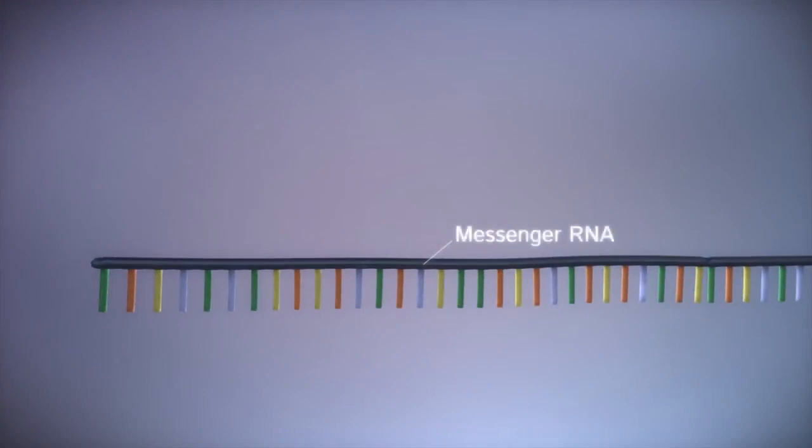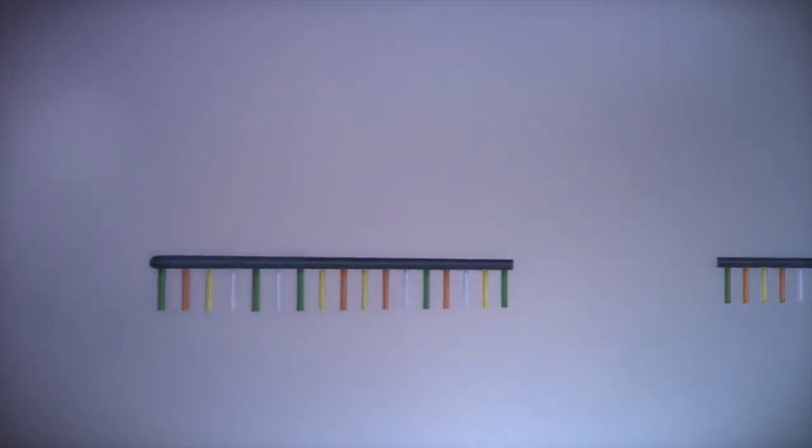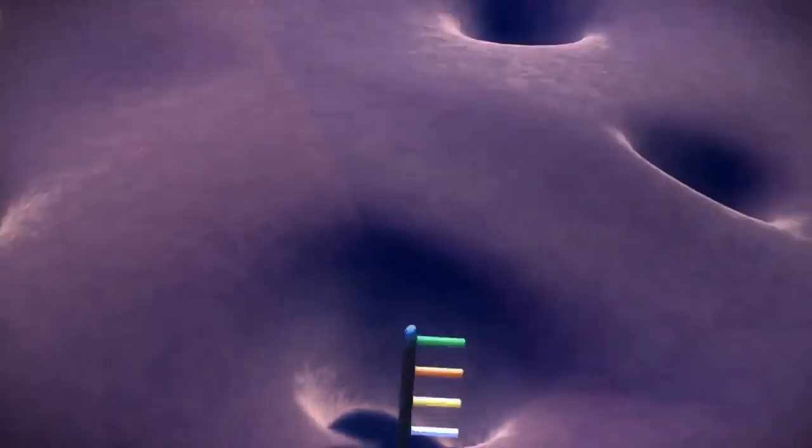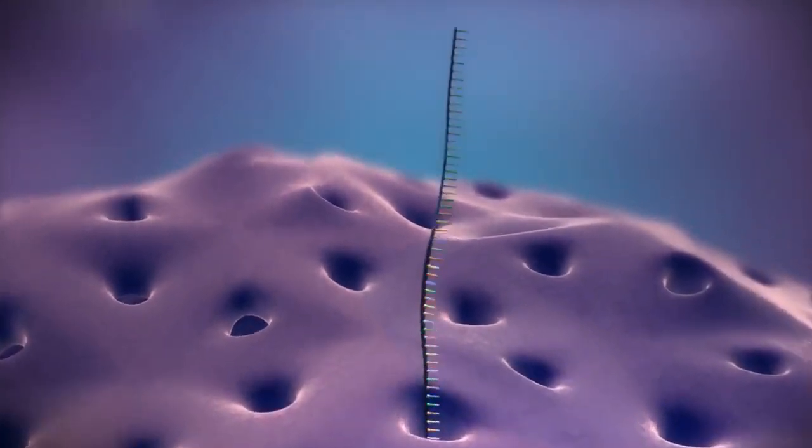Before the messenger RNA can be used as a template for the production of proteins, it needs to be processed. This involves removing and adding sections of RNA. The messenger RNA then moves out of the nucleus into the cytoplasm.